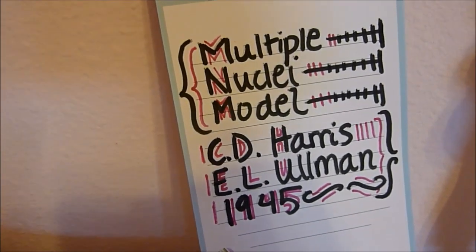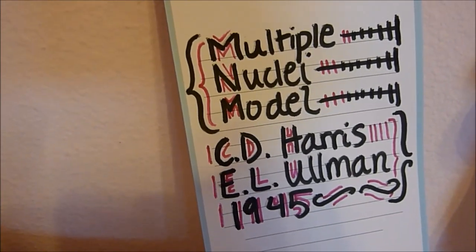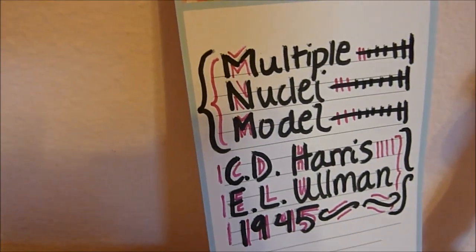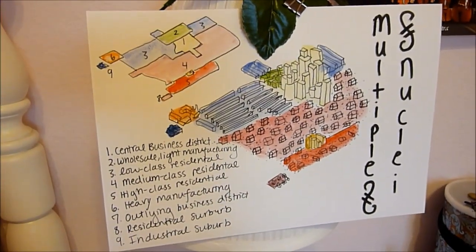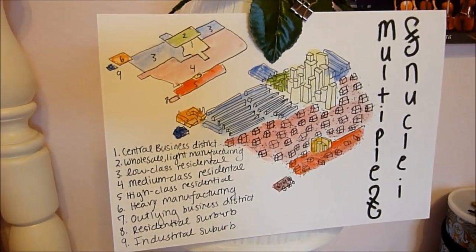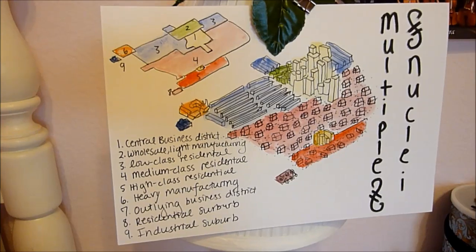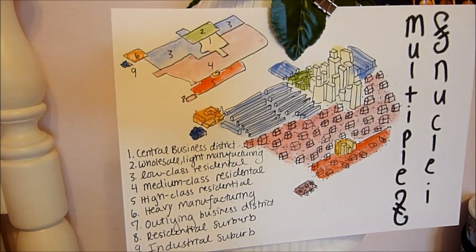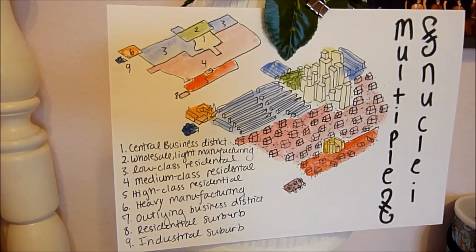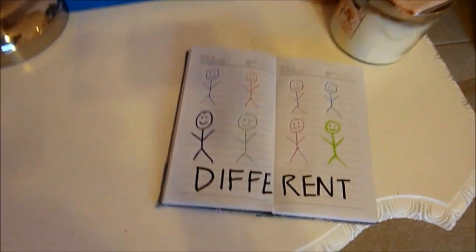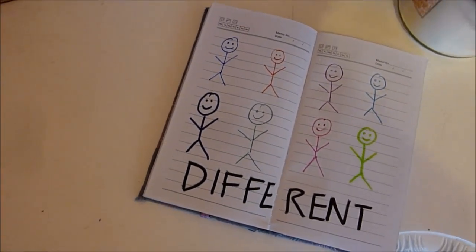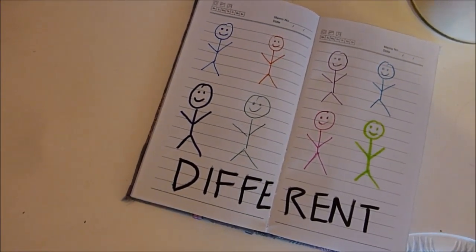Finally, the third model, which was created in 1945 by C.D. Harris and E.L. Ullman, is known as the multiple nuclei model. This model states that rather than having just one area of growth, a city expands through several large nodes. This model takes into account the surrounding nodes and suggests that different people in different industries would cluster around different nodes, based on interests and functionality. This, in turn, allows the nodes to influence the areas surrounding them, further affecting the development of an area.